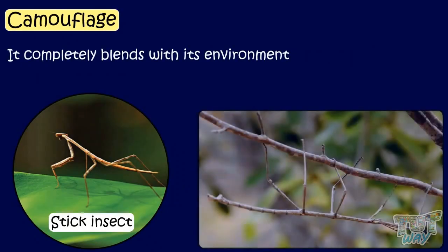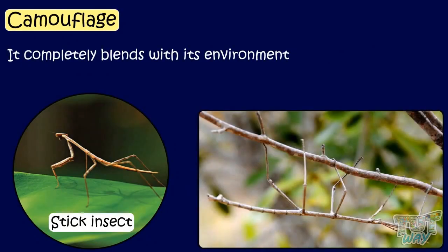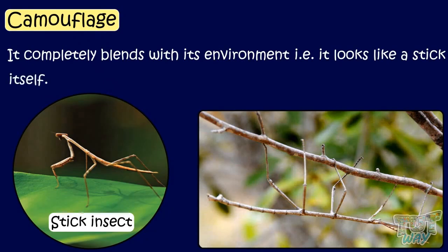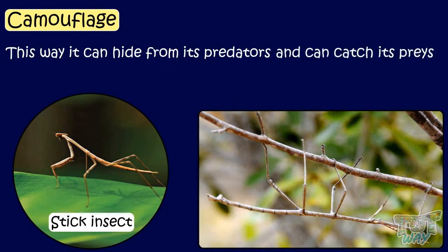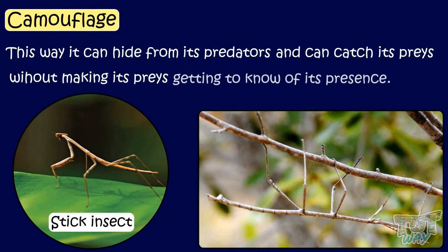This is a stick insect. It completely blends with its environment — that is, it looks like a stick itself. This way it can hide from its predators and can catch its prey without making its prey aware of its presence.